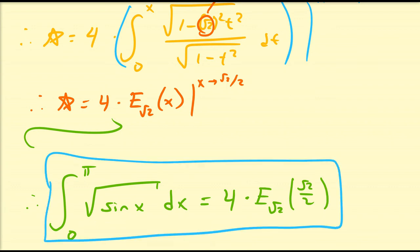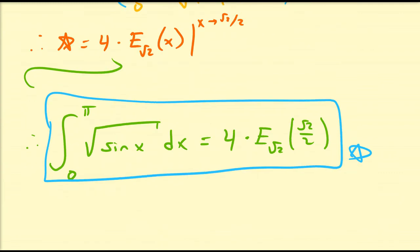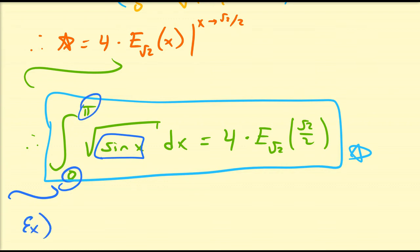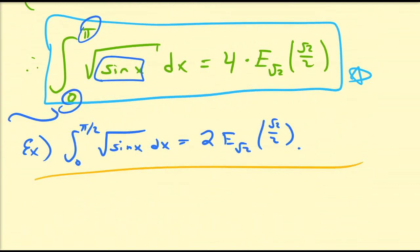So the integral from 0 to π of the square root of sin x dx equals 4 times the elliptic integral with parameter square root of 2 evaluated at root 2 over 2. Since sin x is symmetric about x equals π/2 on the interval 0 to π, we can also show that the integral from 0 to π/2 of the square root of sin x dx equals 2 times the elliptic integral with parameter square root of 2. This is an application of how to use elliptic integrals to find closed-form representations of integrals that have no elementary primitives. Hope you enjoyed.